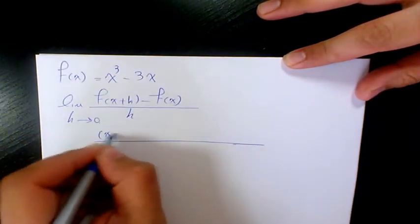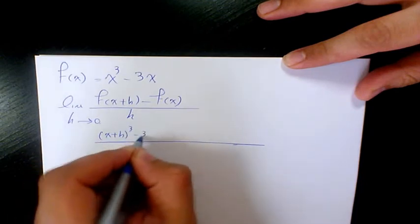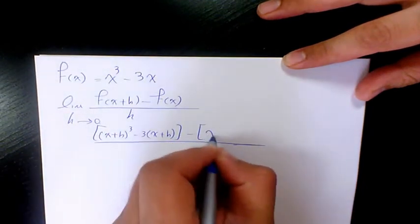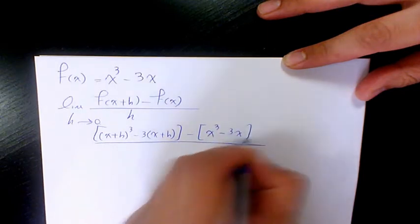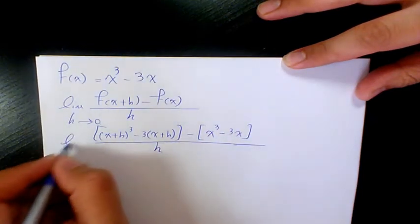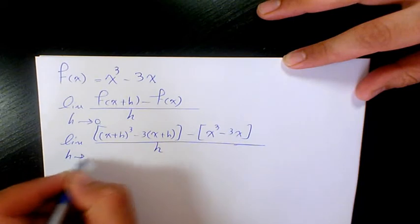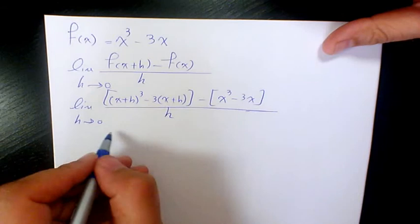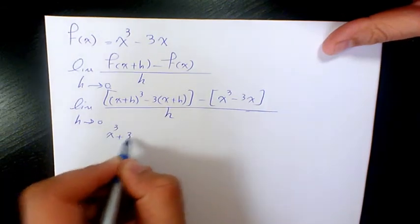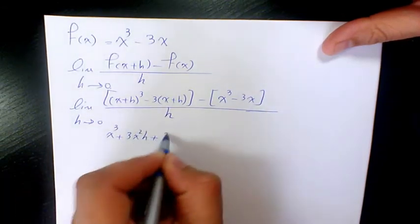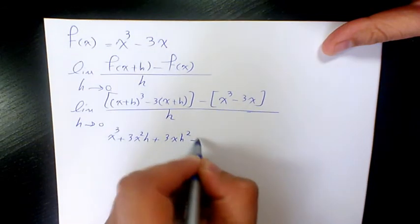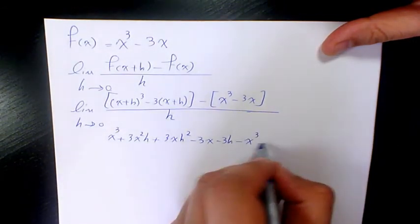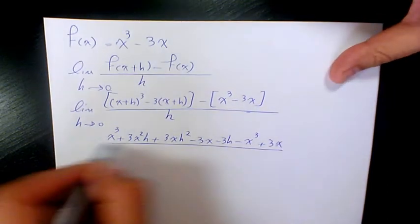It's going to be (x+h)³ - 3(x+h), minus (x³ - 3x), divided by h, when h approaches 0. Expanding gives us x³ + 3x²h + 3xh² + h³ - 3x - 3h, minus x³ + 3x, divided by h.